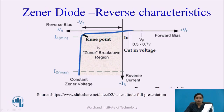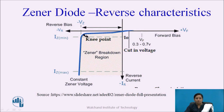The reverse VI characteristic of Zener diode has reverse current on the Y axis and reverse voltage on the X axis. Whenever the reverse voltage is small, a very small leakage current flows through the device due to minority charge carriers. Whenever the reverse voltage becomes equal to the Zener voltage, the current flowing through the device increases sharply and rapidly. That voltage is called the Zener voltage.